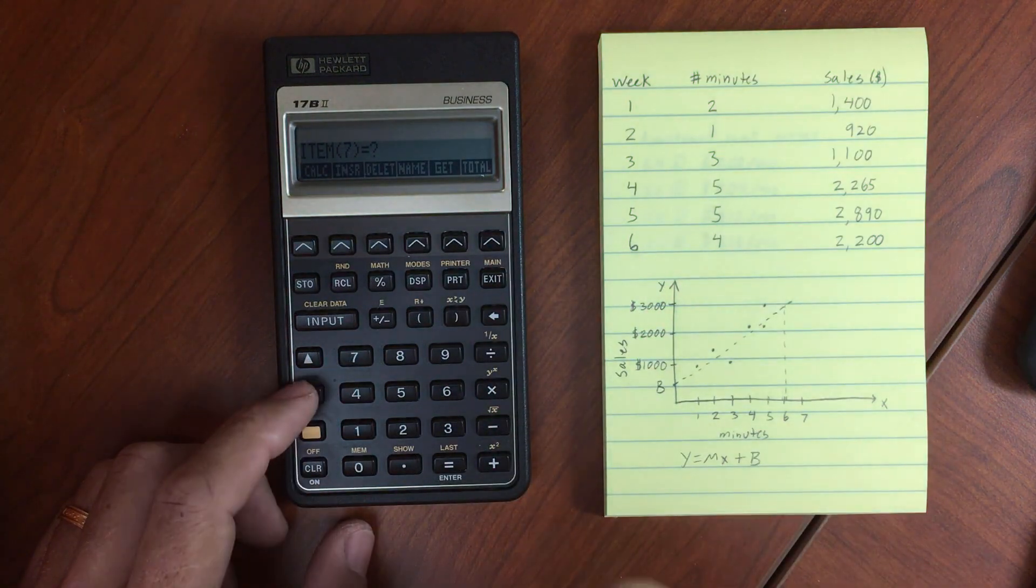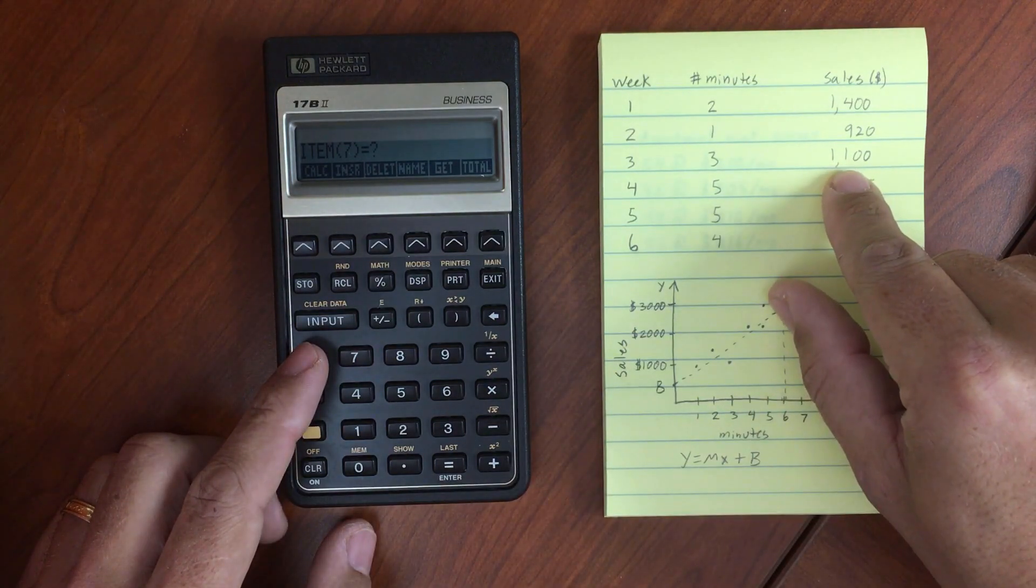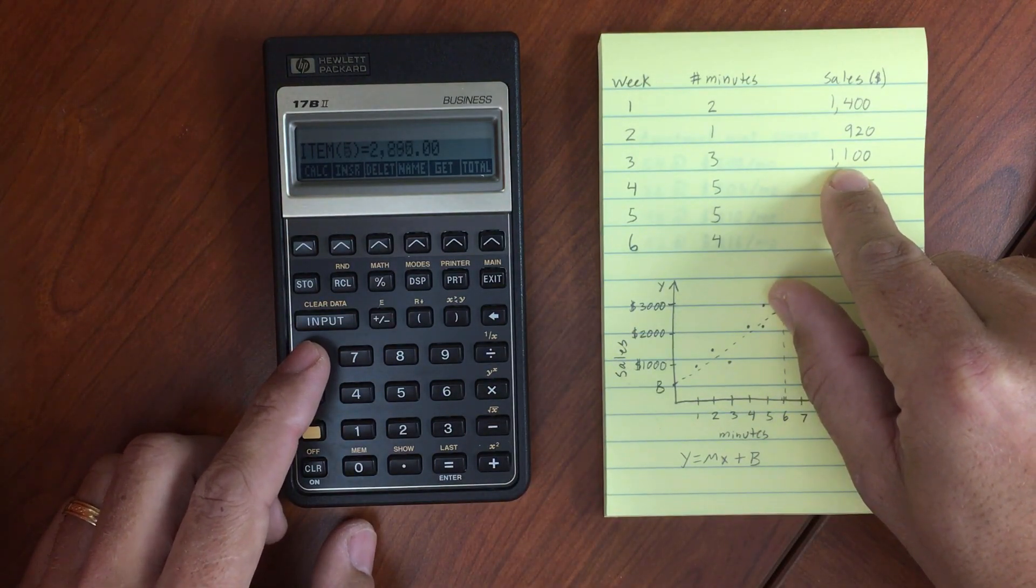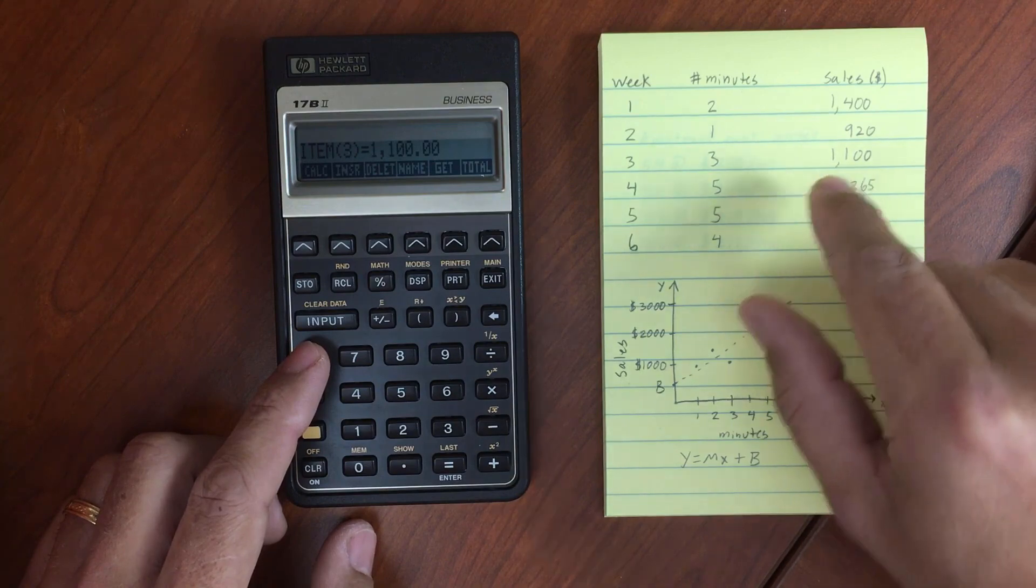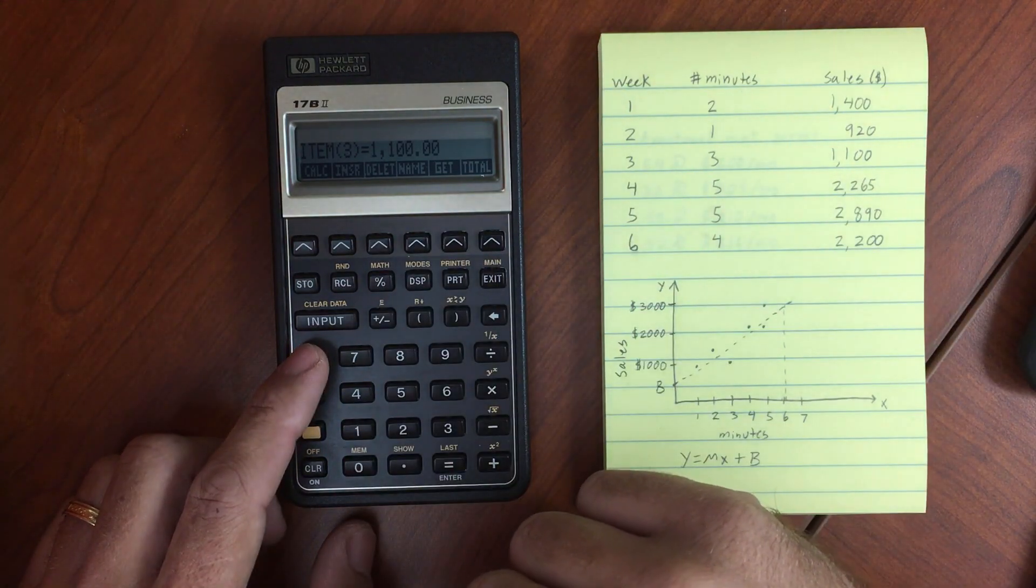Okay, and by the way, I just realized we had an error in our sales, so I went back up to item number three, and we entered $1,100 instead of $1,100.